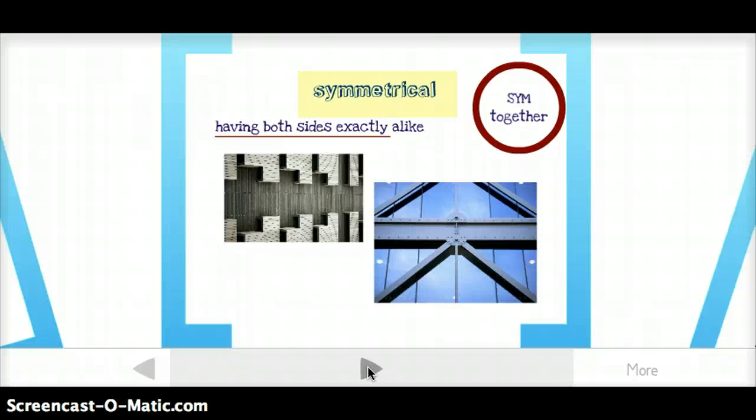Symmetrical, again, two roots. Meter meaning measure and sim meaning together. It means measured together, technically. Really and truly, we think of it as having both sides exactly alike. So both of these pictures are symmetrical in some way. If you fold them in half one way, the sides would be exactly alike.